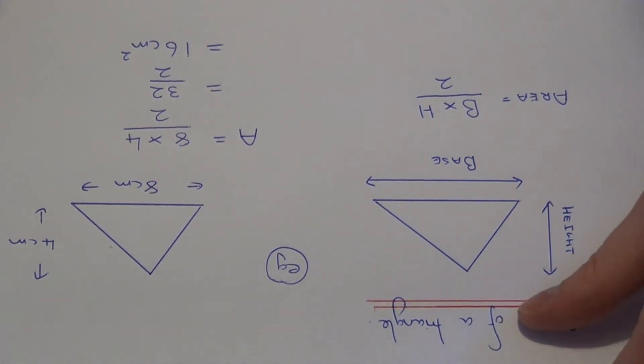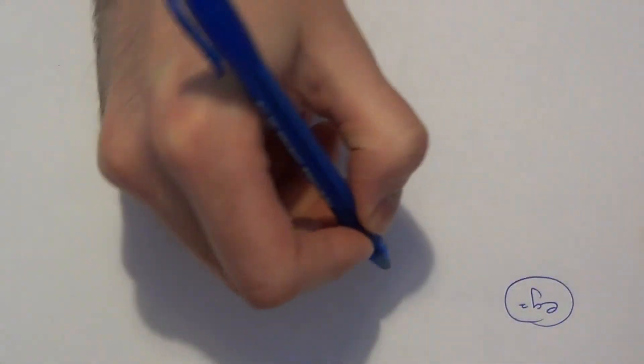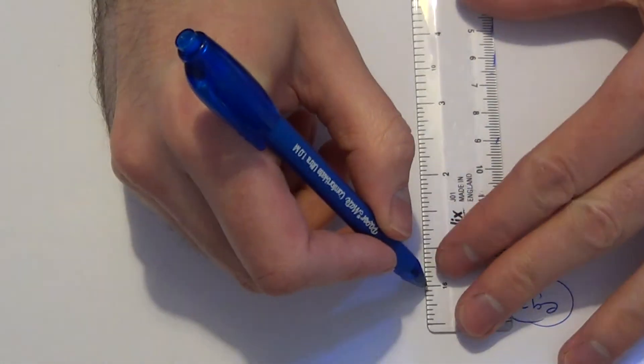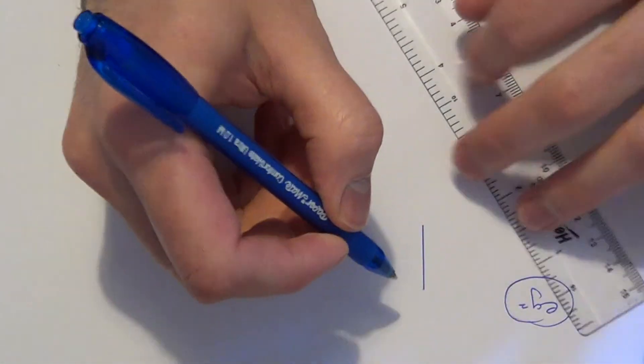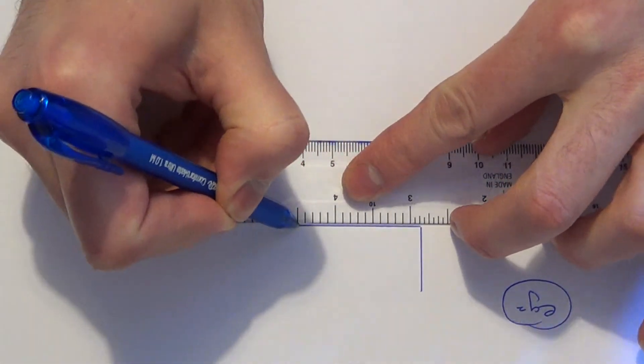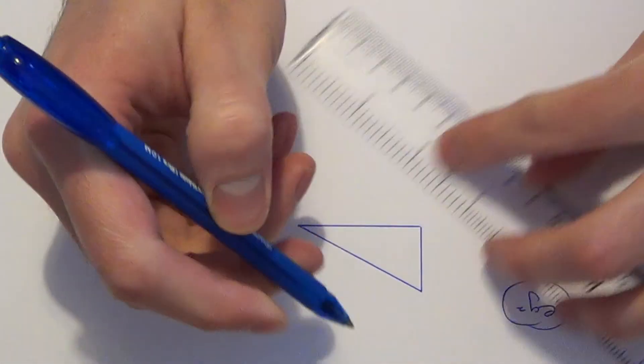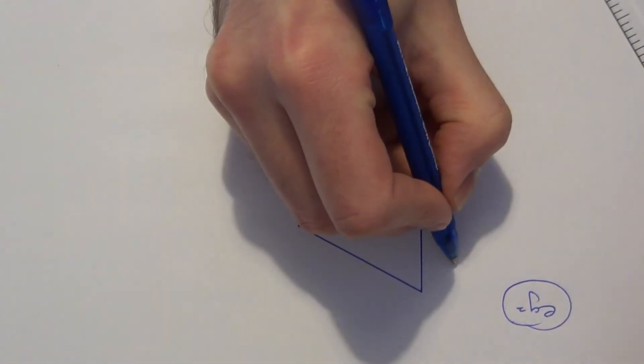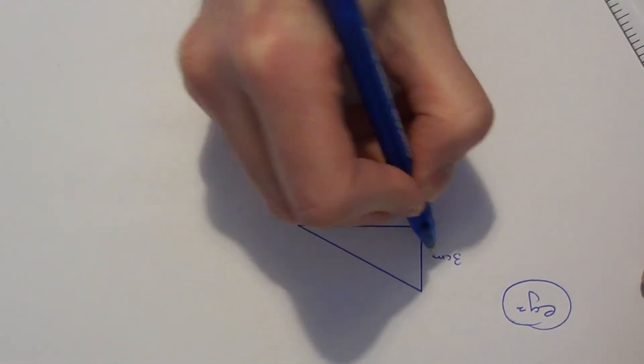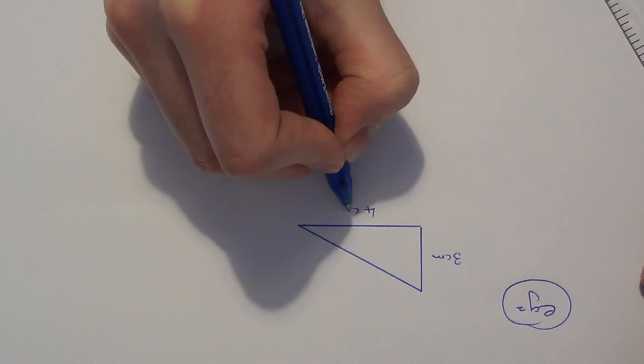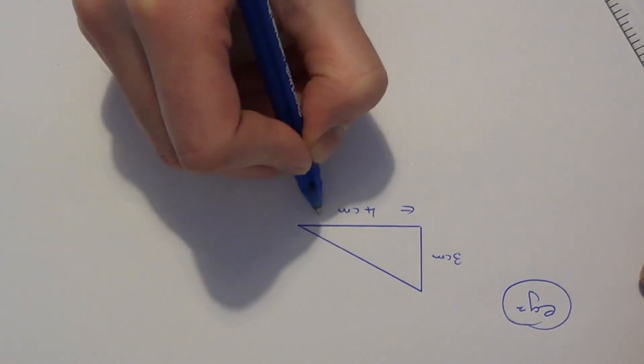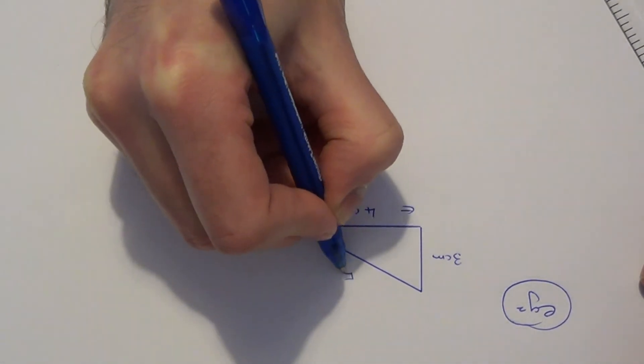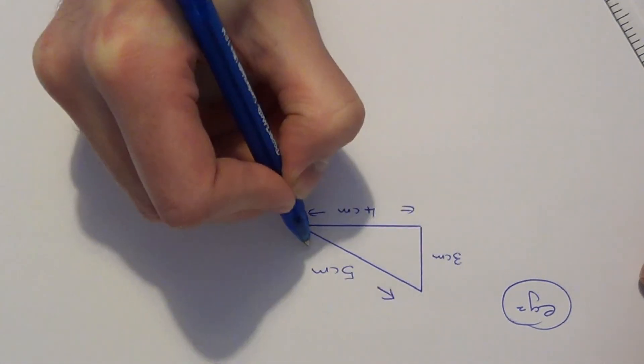Let's look at one more example. This time we have a right-angled triangle with a height of 3 centimeters, a base of 4 centimeters, and a sloping length of 5 centimeters.